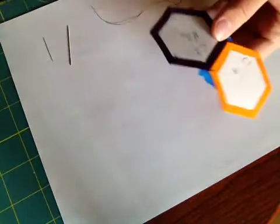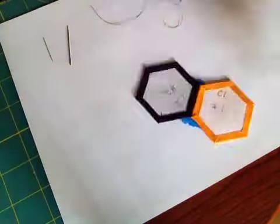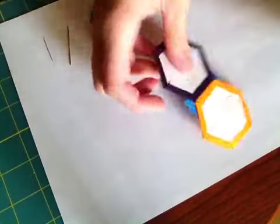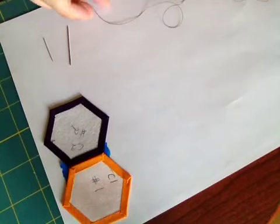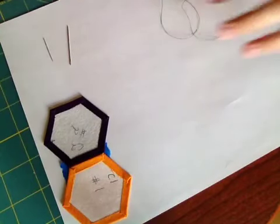Instead of pinching these two hexagons right sides together, I'm going to let them lay flat as I stitch them together. I'm going to set this aside and show you how to thread your needle and use a quilter's knot.